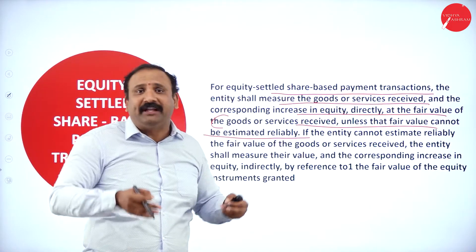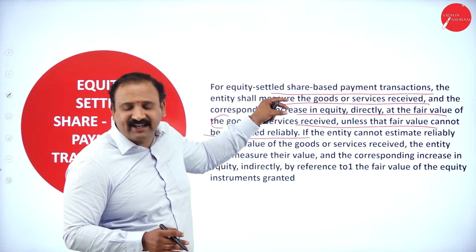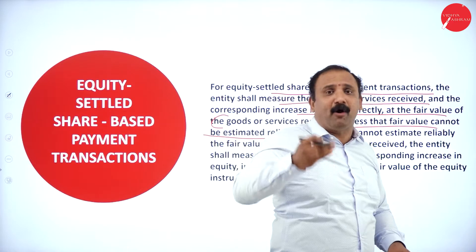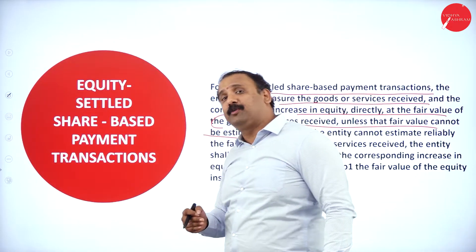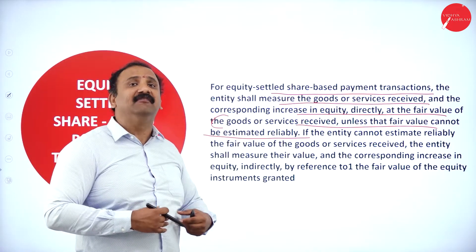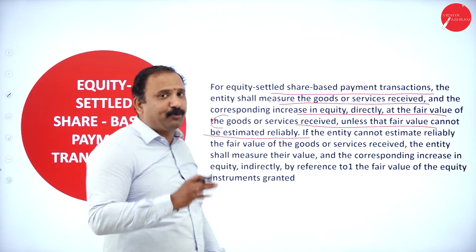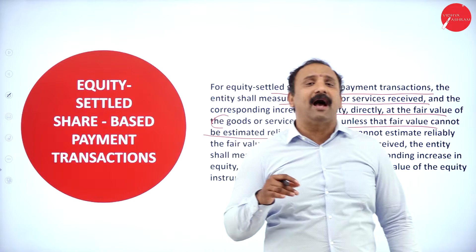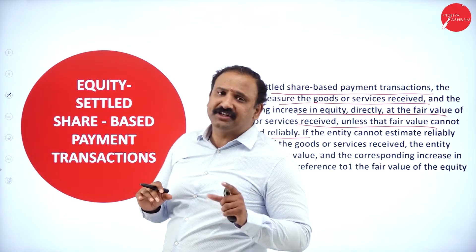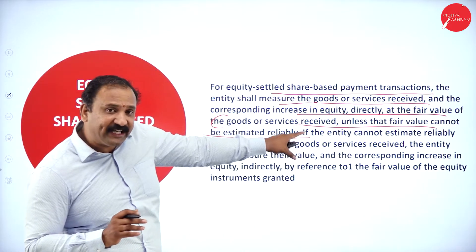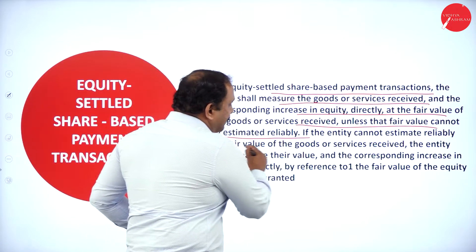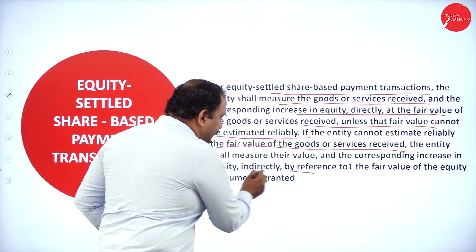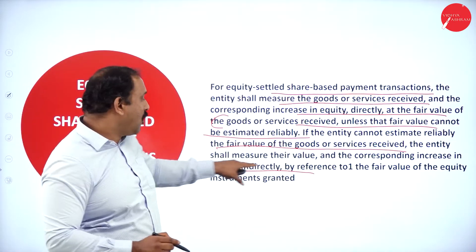Only when you are getting that equity back in hand and at that point when it gets recognized, we are going to talk about the fair value and the recognition. That is the junction where you will be able to tell that this is where we have received and estimated the reality. If the entity cannot estimate the fair value of the goods or services to be received, the entity shall measure their value based on the corresponding increase in equity indirectly by reference to the fair value of the equity instruments granted.